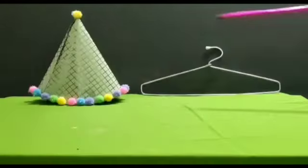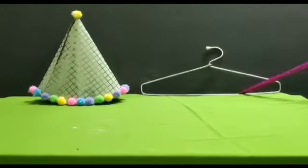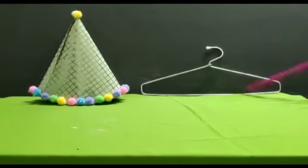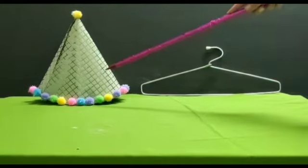Next we have two more objects. This object looks like a triangle. It is two-dimensional and this object looks like a cone and it is three-dimensional.